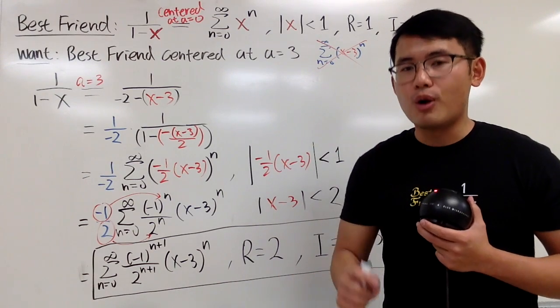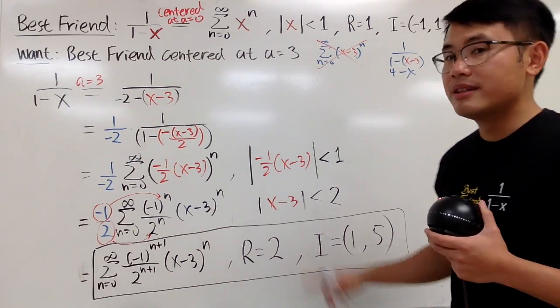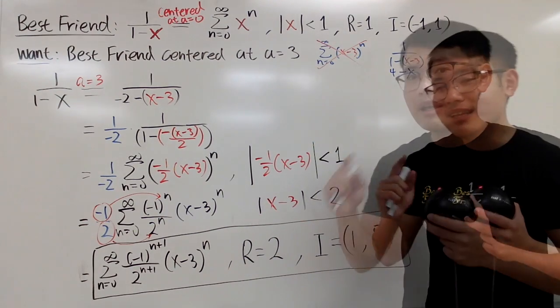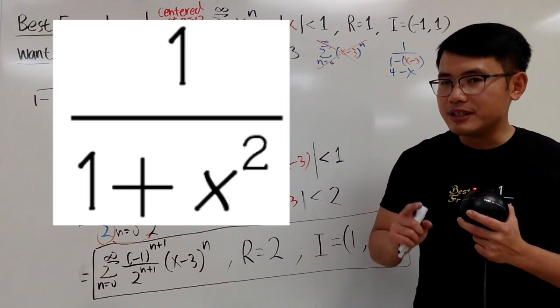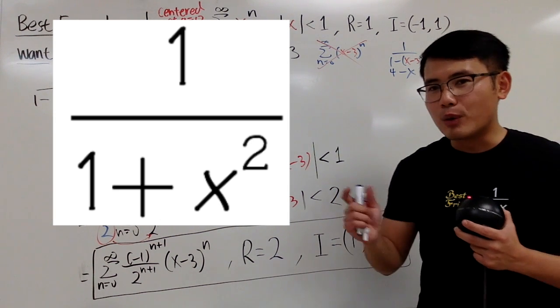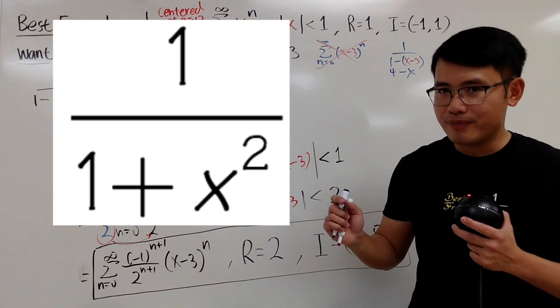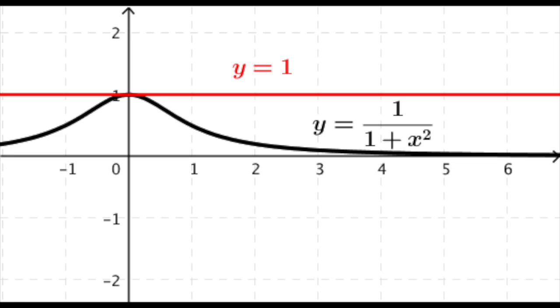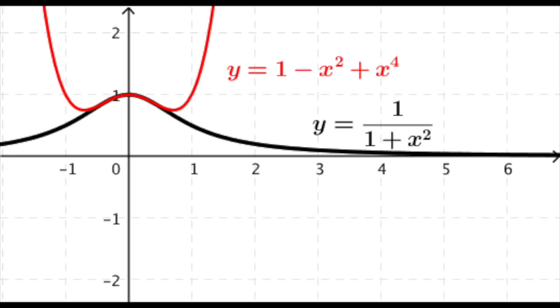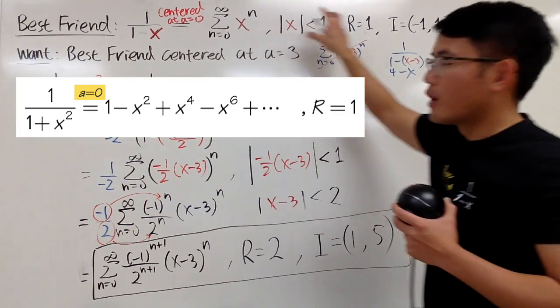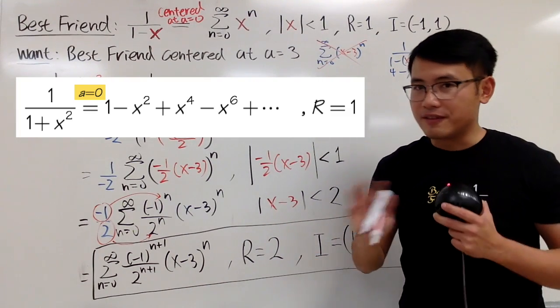Because another example for you guys is this one. Let's look at the function, 1 over 1 plus x squared. And you see, the domain for that function is all real numbers. And let's look at the power series expansion at 0. You see, that's right here. And the r for that is 1. And to do that, you can just plug in negative x squared into this x right here from our best friend. You can just work that out. That's fine.